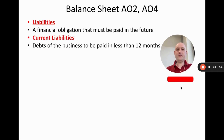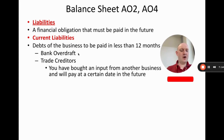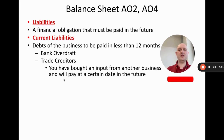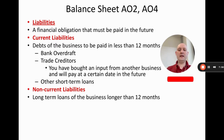Current liabilities are debts we must pay within the next 12 months. Bank overdraft is when the bank has allowed our account to go negative — normally short-term due to high interest charges. Trade creditors is the opposite of debtors: another business has given us trade credit, we've received the inputs but haven't paid yet, so we'll need to pay within 12 months. Finally, other short-term loans are bank loans of less than 12 months.